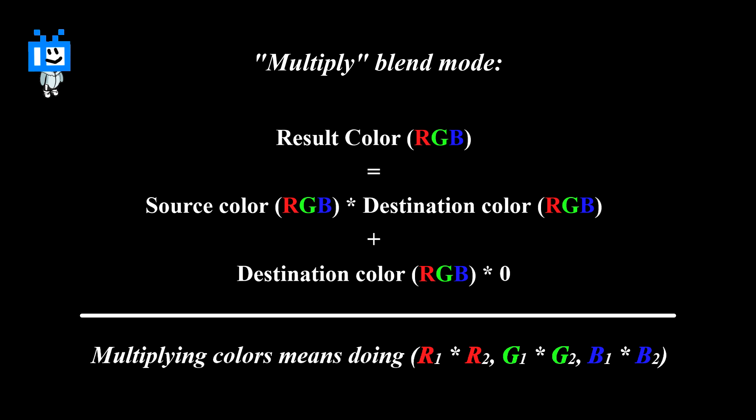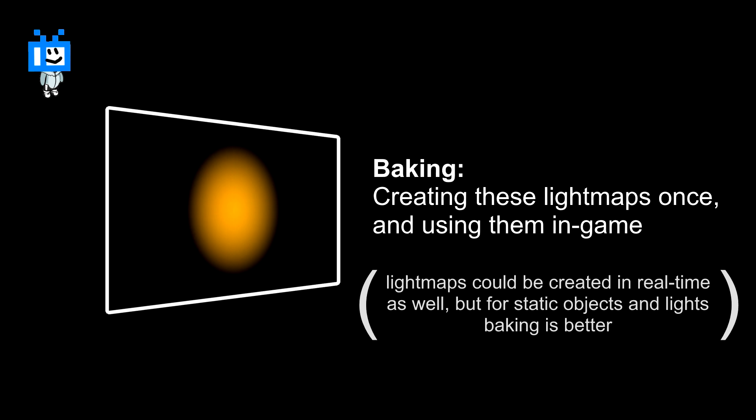Here's how that would look as a formula. It's a little cheeky. You multiply the destination color by zero and multiply the source by the destination color, or vice versa. That's what is called baking, by the way. You create or bake these light maps beforehand, so they don't have to be calculated every time you need it.